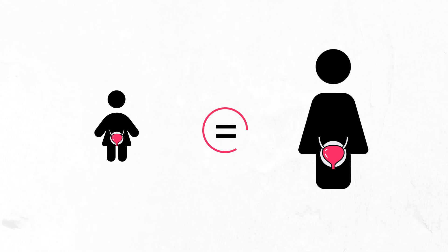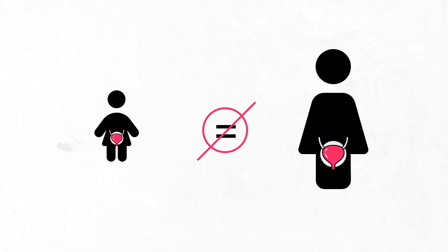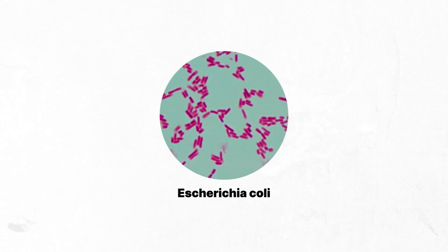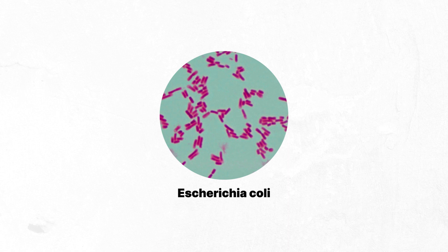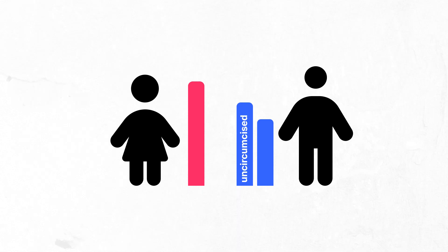Urinary tract infections in the pediatric population present differently than in adults, and could present with irritability, fever, vomiting, foul-smelling urine, and poor oral intake. The typical culprit that causes this type of infection is E. coli. Urinary tract infections are more common in females than in males and more common in uncircumcised males.